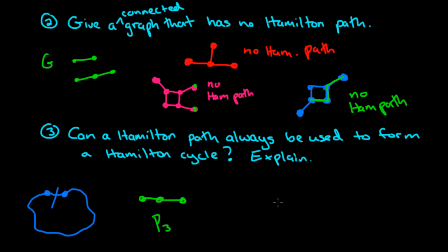You can make more complicated examples. Take a triangle and tack on a pendant vertex. Does it have a Hamilton path? Sure — go all the way around the outside and you've made a Hamilton path. But can you make a Hamilton cycle? No, because the only cycle in the graph uses just three vertices and the fourth is left out. So the answer is no, a Hamilton path cannot always be extended to a Hamilton cycle, and here are a couple of examples showing why.